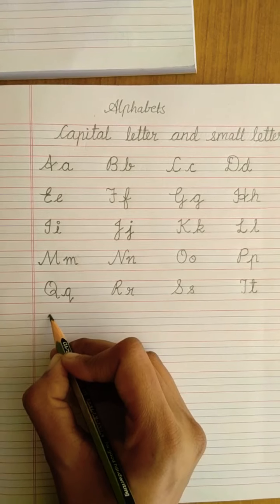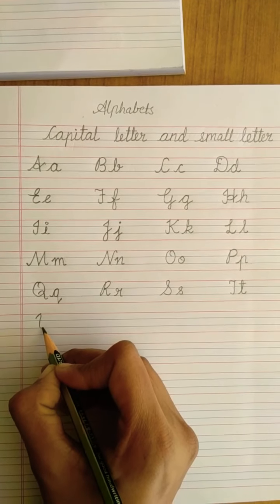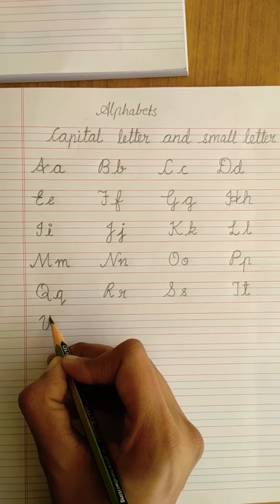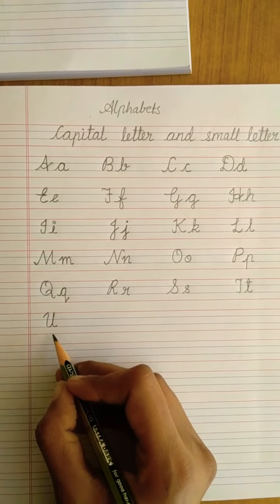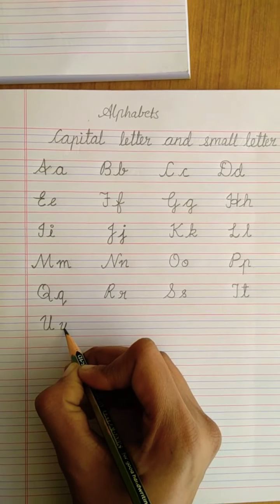Next we have letter U. A cross line, touch to the red line, come down, blue line, again go up to the red line and give a back curve. U. Same you have written, you will be writing for small letter too.